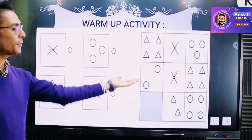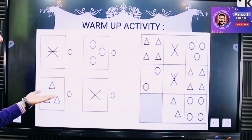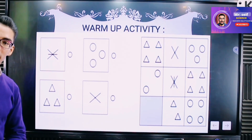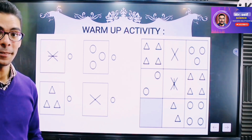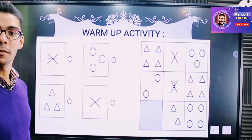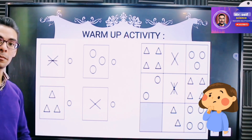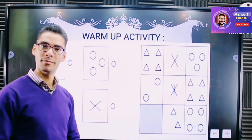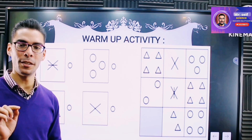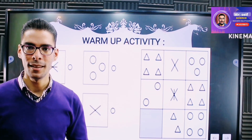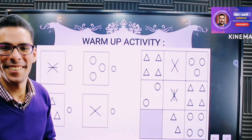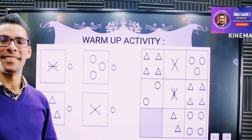In front of you is a question, and here are the answers. Would you like to try? Look at the question — you have four answers. Try to pick one of them. You have a few seconds. You can stop the video, take time to think, and then tell me your answer. Okay — was it hard? Let's find out.